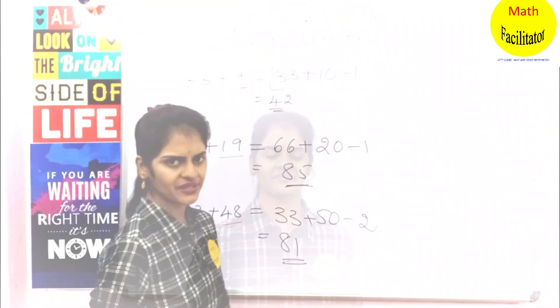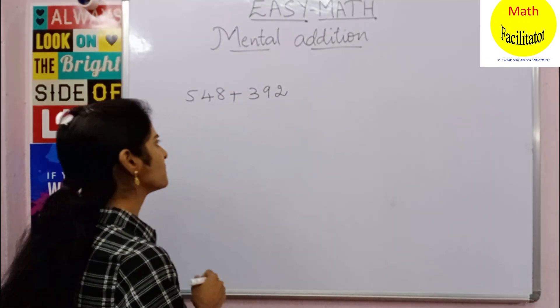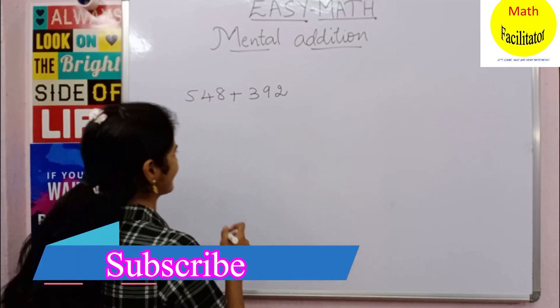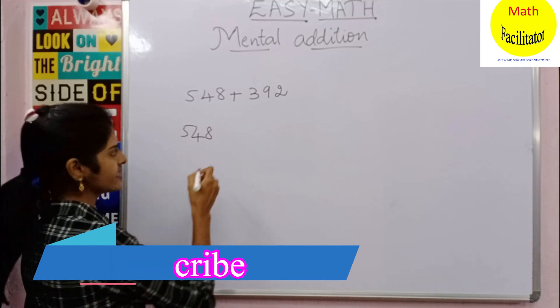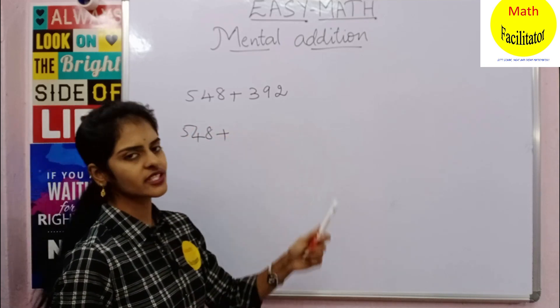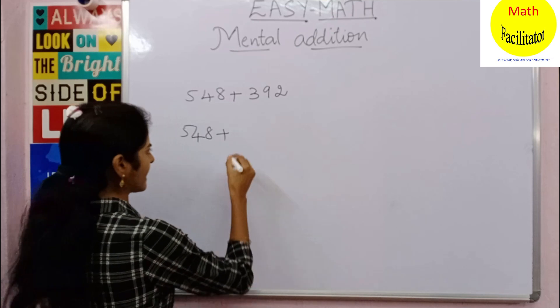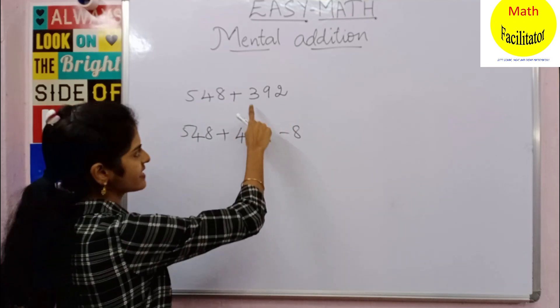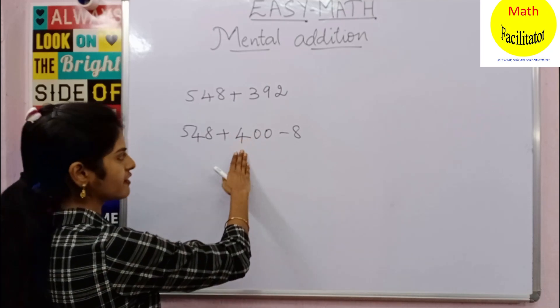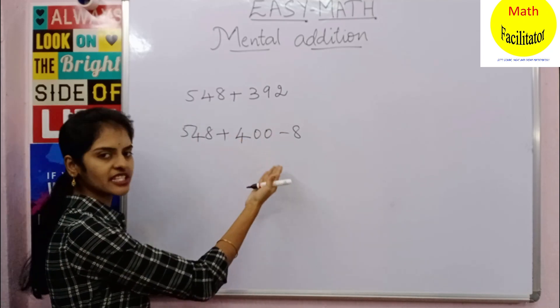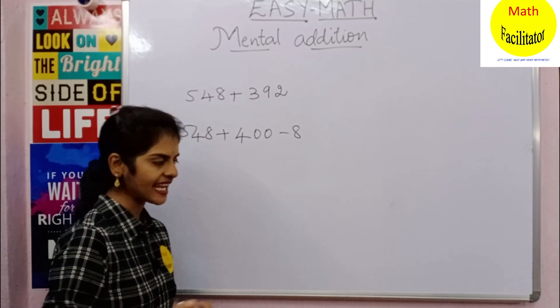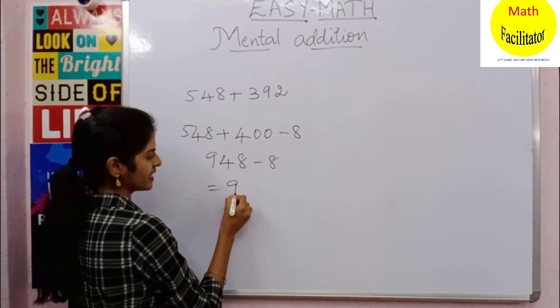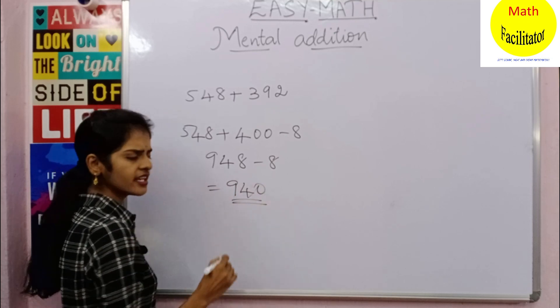Now let us take a big number: 548 plus 392. So 548 I'm taking as it is, plus 392 is closer to 400, so I can write this as 400 minus 8. This is 8 less than 400, so I have written 400 minus 8. Now 548 plus 400 is 948, and minus 8 which is 940.